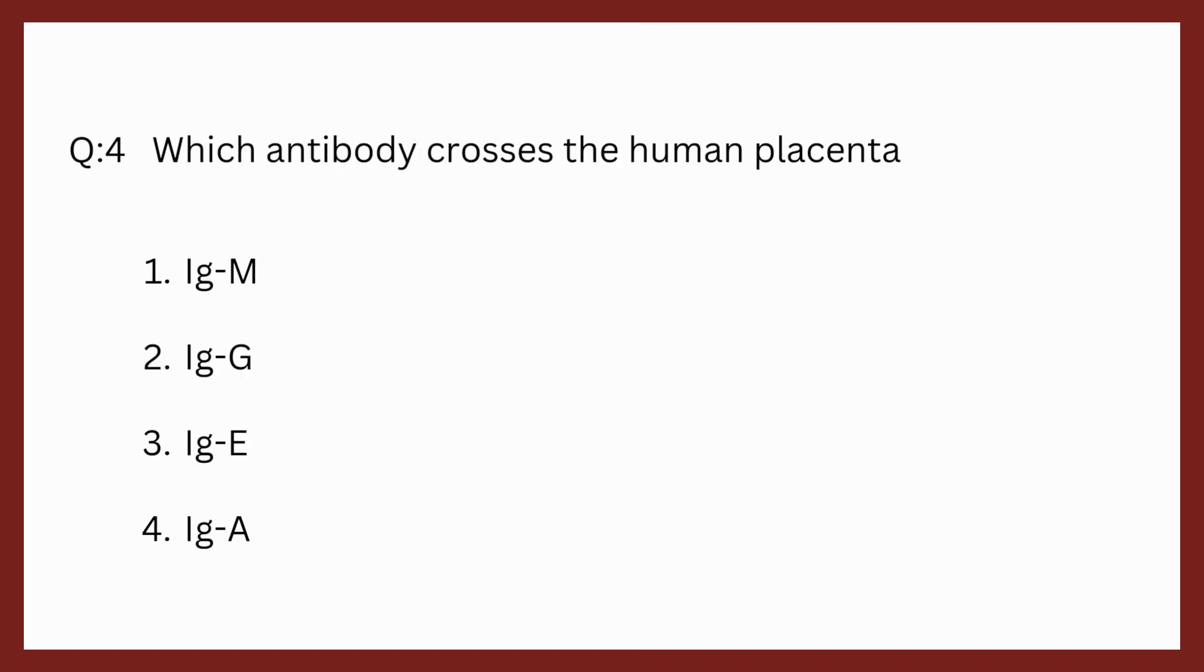Question 4. Which antibody crosses the human placenta? Options are immunoglobulin M, immunoglobulin G, immunoglobulin E, immunoglobulin A. The correct option is immunoglobulin G. It is the only antibody which crosses the human placenta.